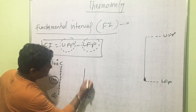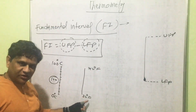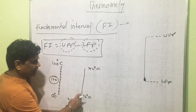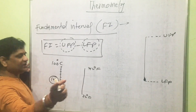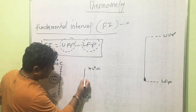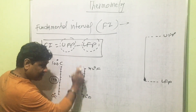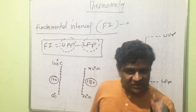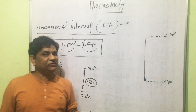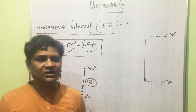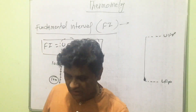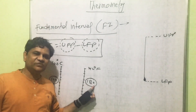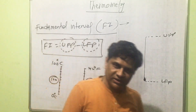Now consider another thermometer on the Fahrenheit scale. The lower fixed point is 32°F and the upper fixed point is 212°F. The fundamental interval is 180, and the number of divisions is also 180 — from 32, 33, 34, 35 up to 212. So fundamental interval equals the difference between upper and lower fixed points, and also equals the total number of divisions on the scale.